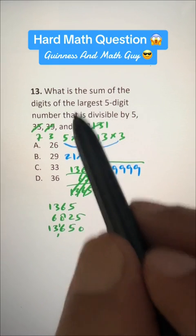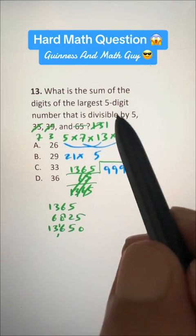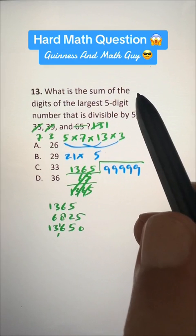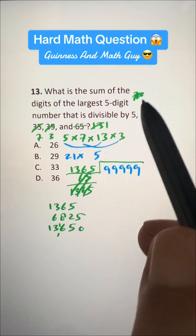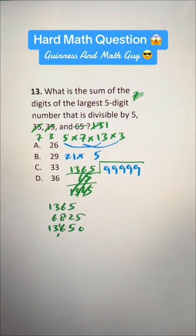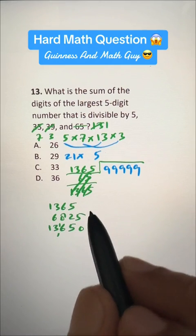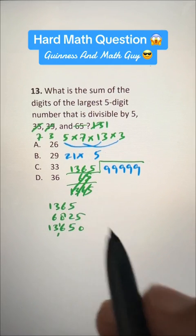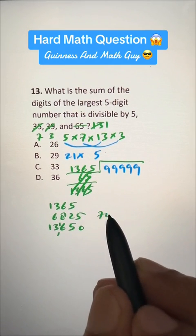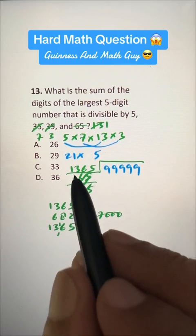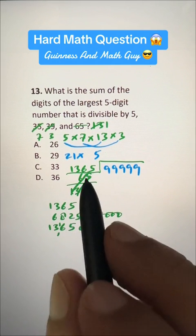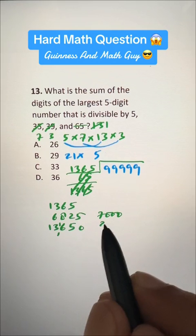1365 times 7. 7 times 1 is 7, so it's 7,000 actually. 7 times 3 is 21, and we have 2 zeros, so it's 2100.